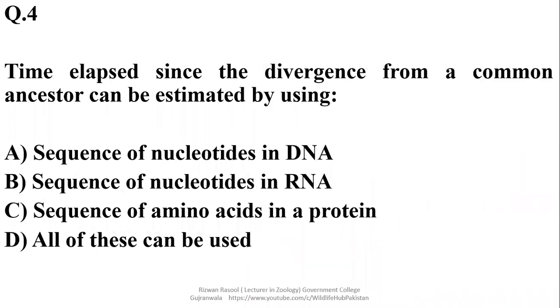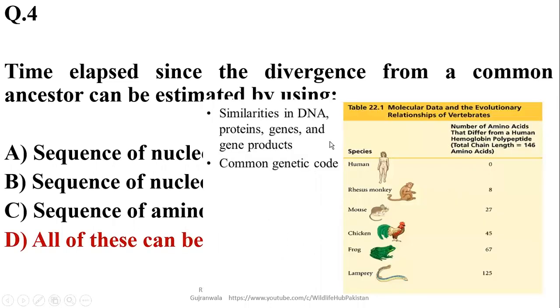Number 4: Time elapsed since the divergence from a common ancestor can be estimated by using different techniques, such as by making an estimation of the changes in nucleotide sequences of the DNA, changes in sequence of nucleotides in the RNA, or sequences of amino acids as well in the protein. So right option in this case is Delta. We can use various techniques, various ways to find out common ancestry in case of molecular biology.